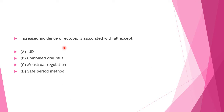Next question: Increased incidence of ectopic pregnancy is associated with all except — Option A: IUD, Option B: combined oral pills, Option C: menstrual regulation, Option D: safe period method. Answer to this question is Option B: combined oral pills.